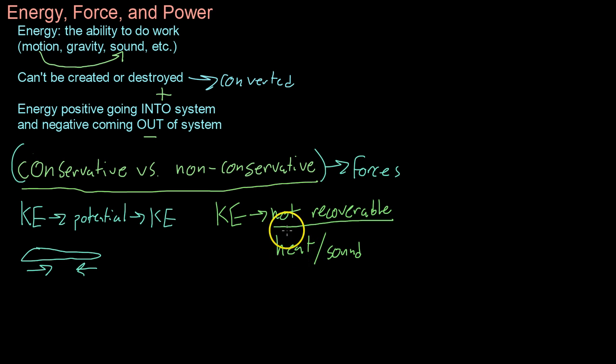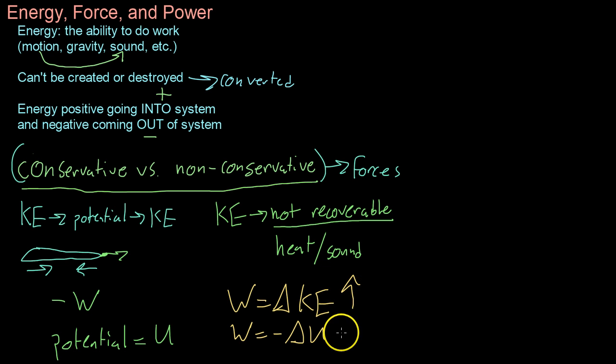So non-conservative forces lose, or not lose energy because energy is always conserved, but what they do is make it so that the energy is no longer useful. They make it not recoverable. Conservative forces can do negative work because they can remove the energy from this car that was headed along this way and store it as potential energy. Potential energy, we usually represent with the letter U. Because the definition of work is the change in kinetic energy, and because kinetic energy and potential energy must add up to be a constant, this means that work is the negative change in potential energy, which makes sense. As you increase the change in kinetic energy, you must decrease the amount of potential energy and vice versa.